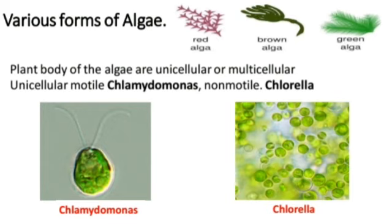The plant body of algae can be unicellular or multicellular - that is, a single cell or multiple cells. An example of a motile unicellular alga is Chlamydomonas, while Volvox is multicellular. Motile means it can travel from one place to another, while Volvox does not travel. There are also various types of algae such as red algae, brown algae, and green algae.